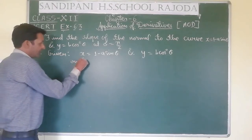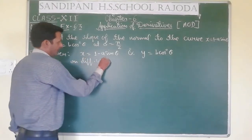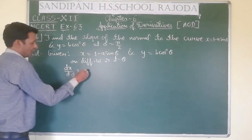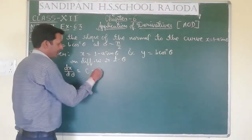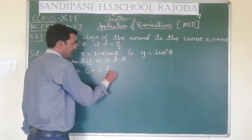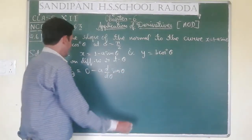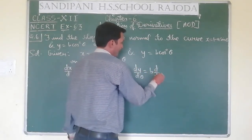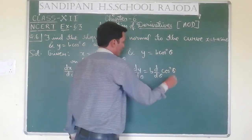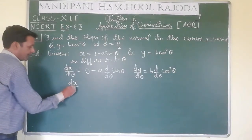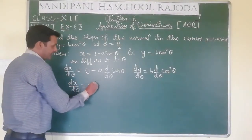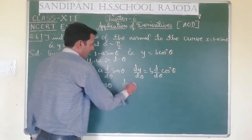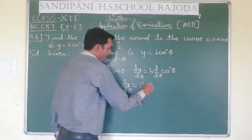On differentiating with respect to θ, dx/dθ = 0 - a · d/dθ(sinθ), because differentiation of 1 is 0. And dy/dθ is the derivative of b cos²θ. So dx/dθ = -a cosθ, and dy/dθ = 2b cosθ initially.